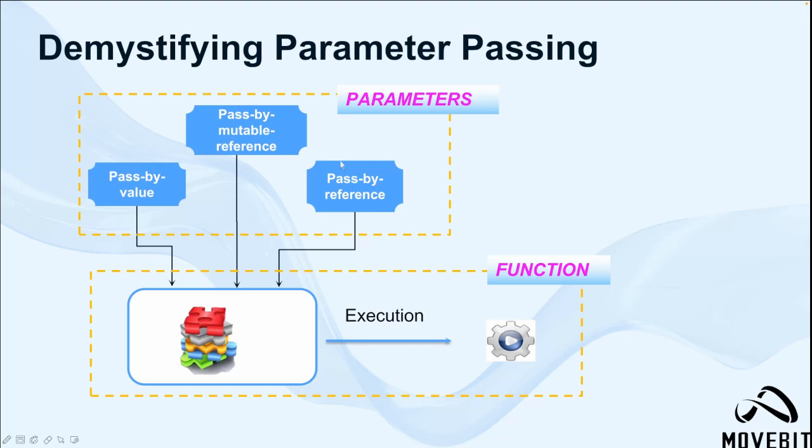The first one is pass by value. The function obtains a duplicate of the argument instead of the original variable. Any modification made to the parameter within the function do not impact the original data.